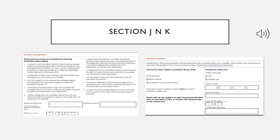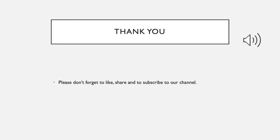Section J is about accepting all the terms and conditions of ADC — go through all these points carefully, then put your signature, name, and date. In Section K, you need to provide payment details: your card number, card expiry date, name on the card, and cardholder signature. Make sure the card you are using has international transactions permitted.